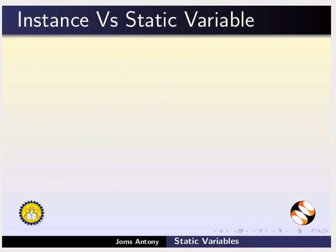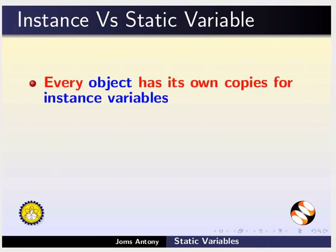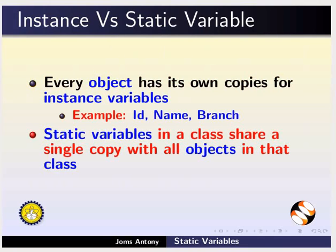Now let us explore the differences between instance variables and static variables. Every object has its own copies for instance variables. Id, name, branch are examples of instance variables. Static variables in a class share a single copy with all objects in that class. Total count is an example of static variable.